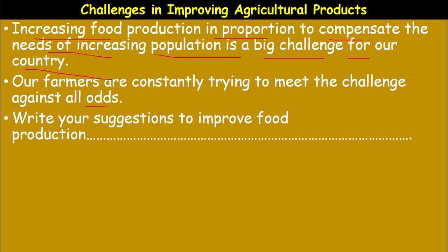Think about it, children. Write your suggestions to improve food production. To increase food production, land for cultivation has to increase. As the population is increasing, most lands are being converted to human residences, for the construction of roads, bridges, and other construction purposes. Some of the land is being allotted for these purposes.